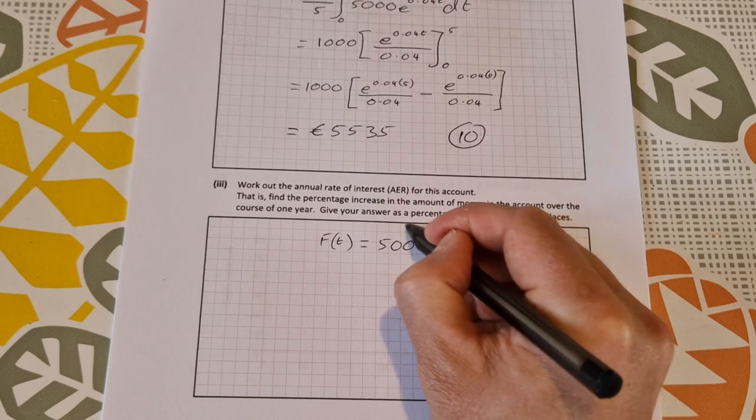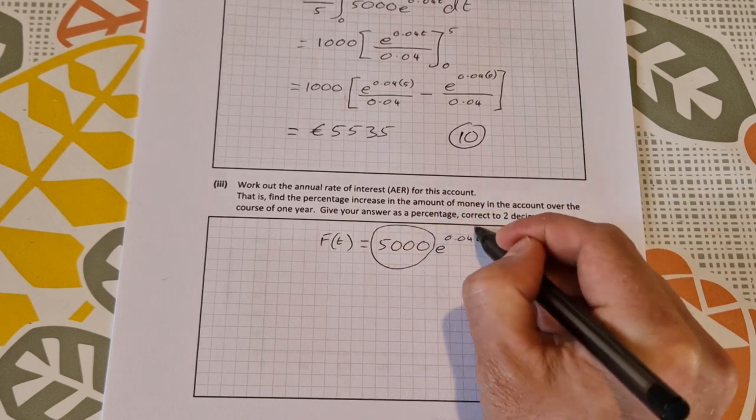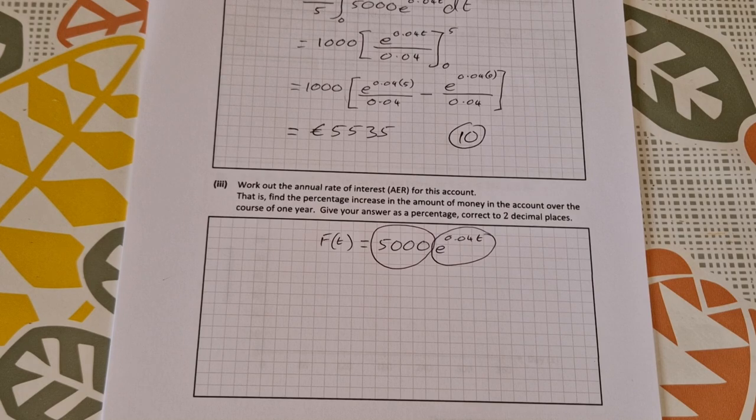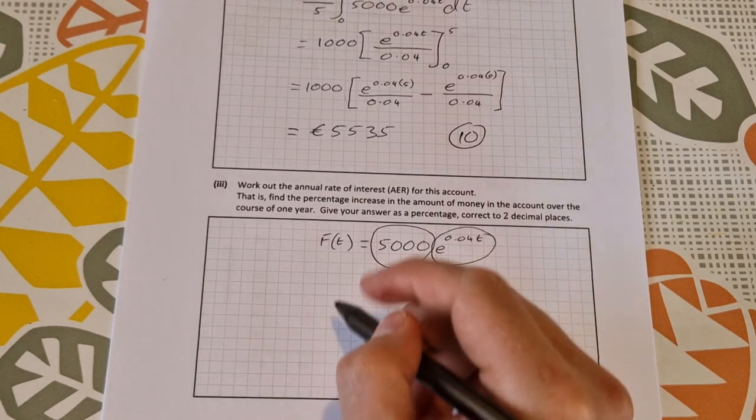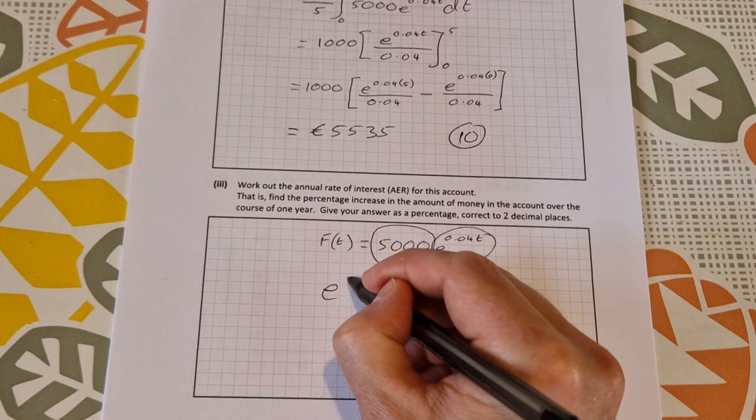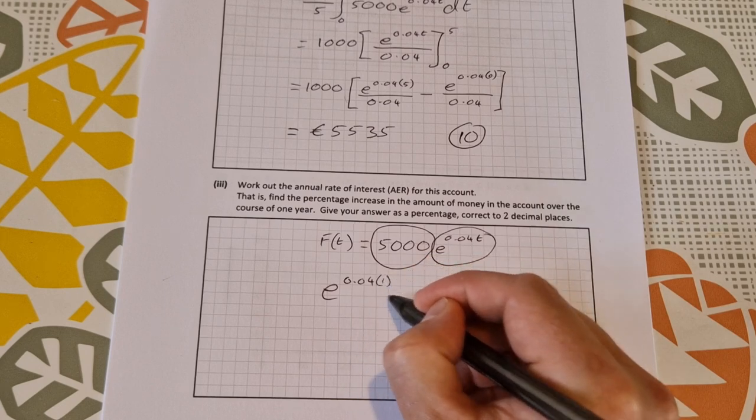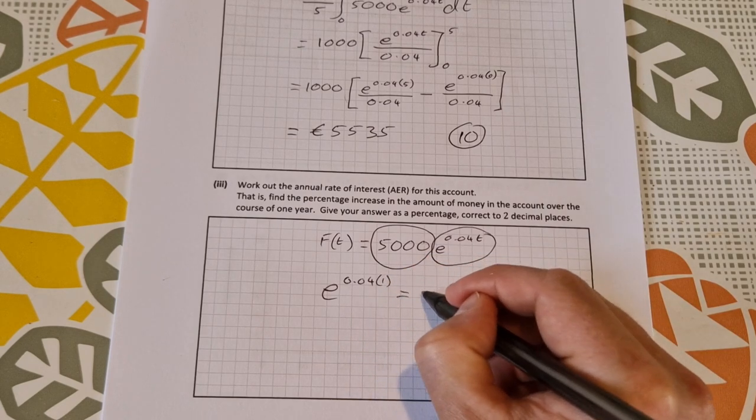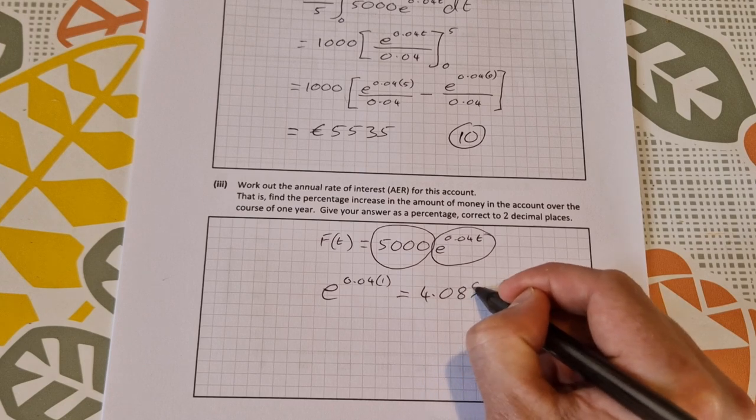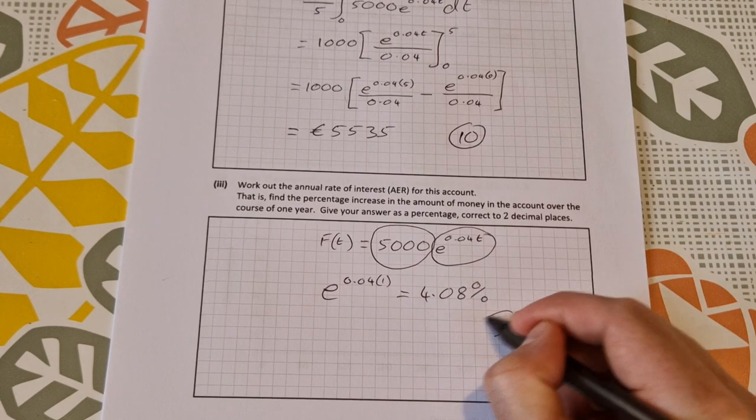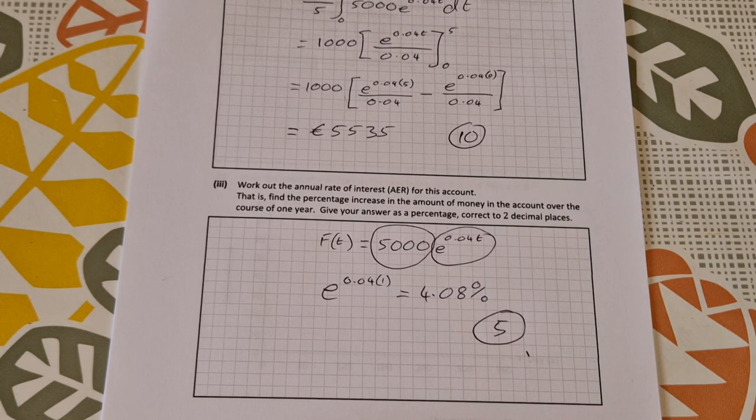Well, 5,000 is how much she put into the account and we're multiplying by this much each year, so that's the rate of interest per year. So it's e to the power of 0.04 times 1 for one year, which works out to be 4.08 percent, and that's worth five marks there at the end. So if you have any questions just ask in the comments below. Thanks for watching and I'll see you in the next video.